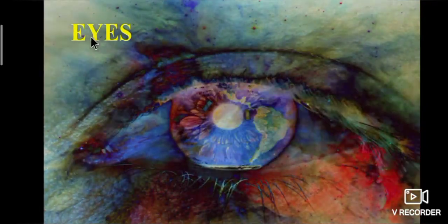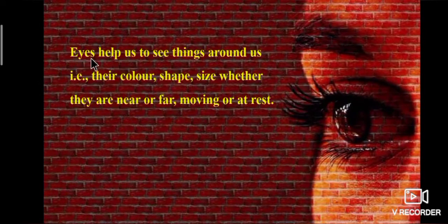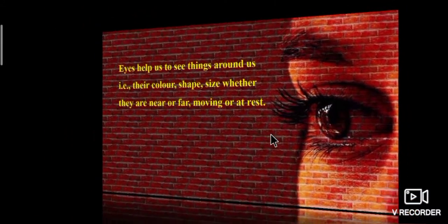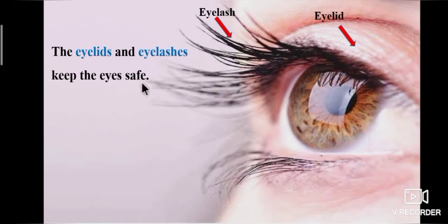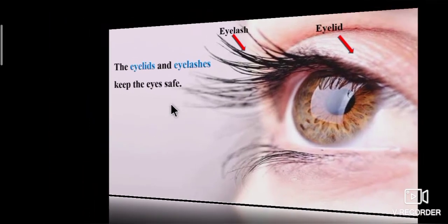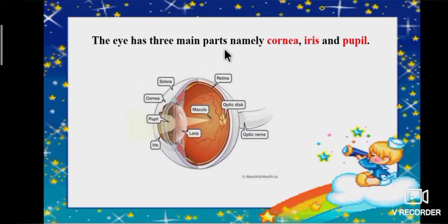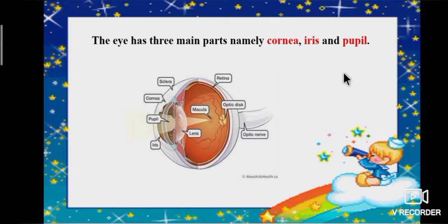Now we will learn about one of the sense organs — eyes. We see the world through our eyes. Eyes help us to see things around us: their color, shape, size, whether they are near or far, moving or at rest. The eyelids and eyelashes keep the eyes safe. The eye has three main parts: cornea, iris and pupil.